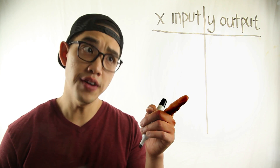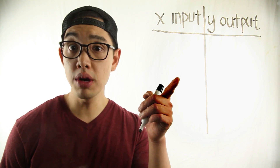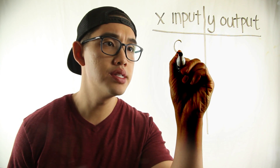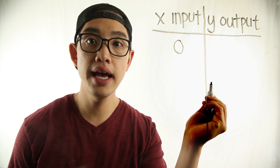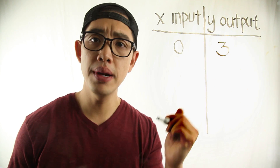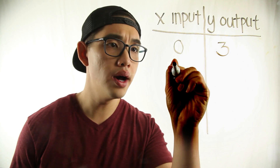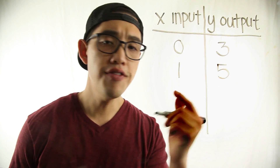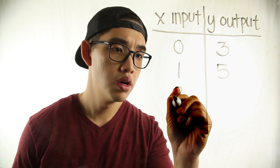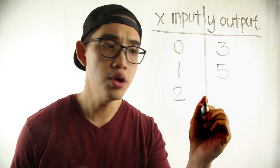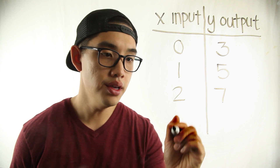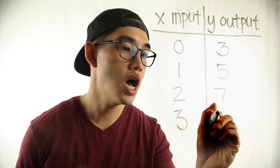Let's do an example. Right here I have a function table and I'm gonna put some numbers into the input. If I put in the number 0, I get 3. If I put in the number 1, I get 5. If I put in the number 2, I get 7. And if I put in the number 3, I get the number 9.